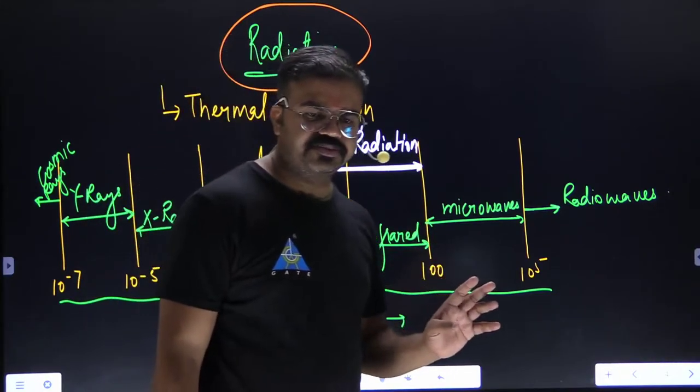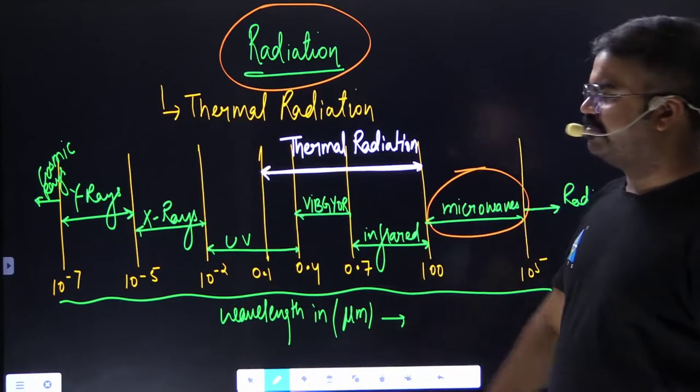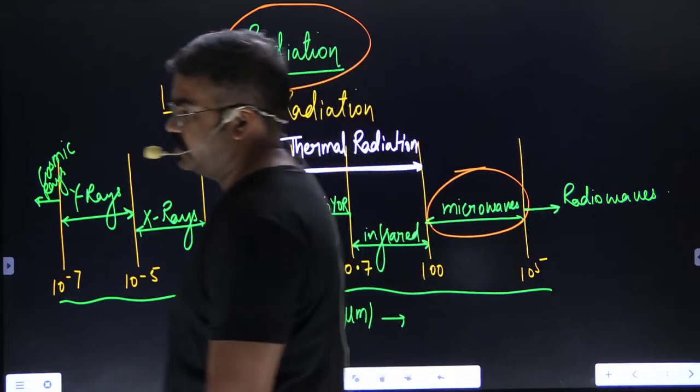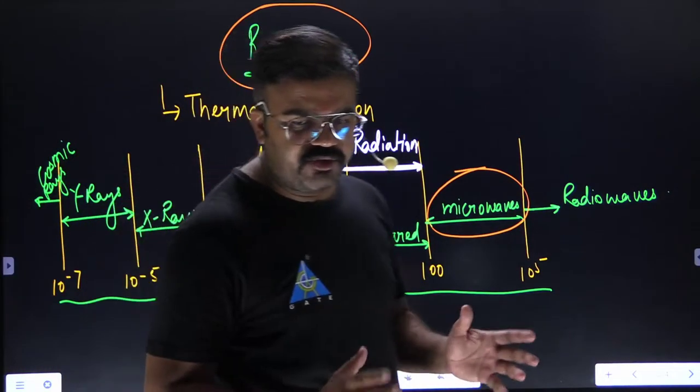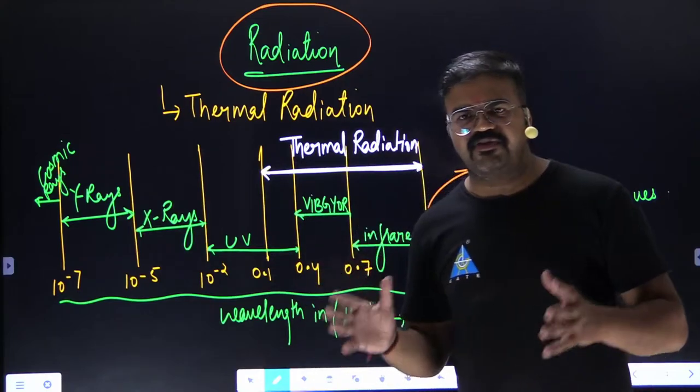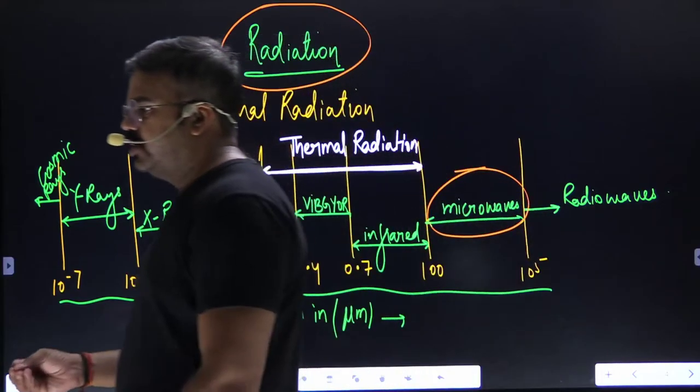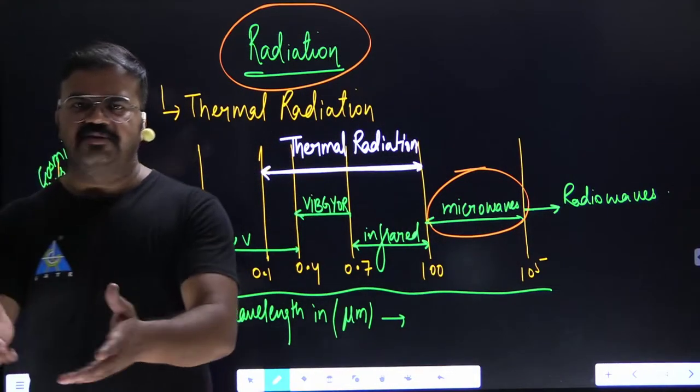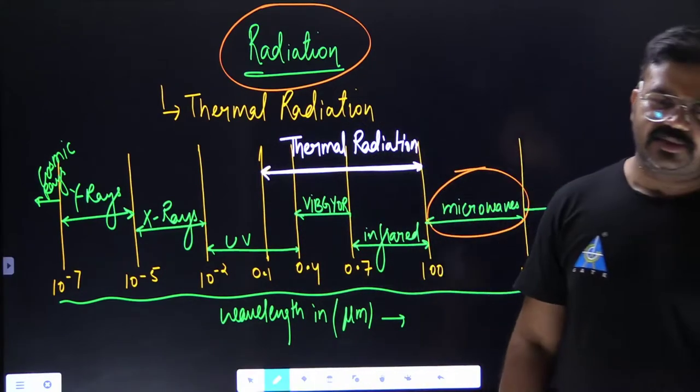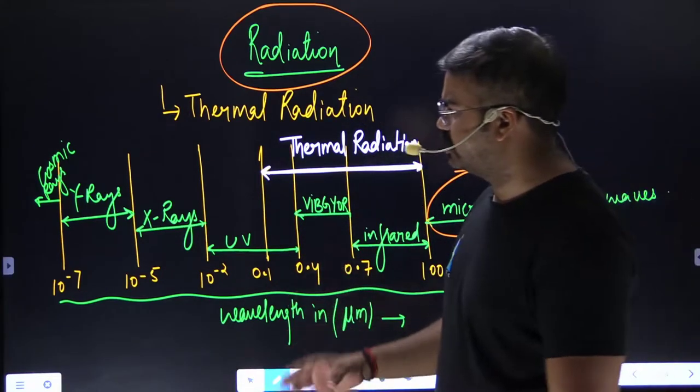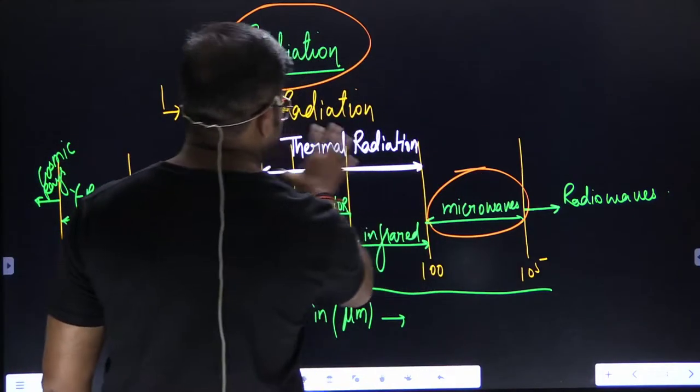But sir, why are you excluding microwave radiation? That's an interesting question. Because if we see, microwave ovens are used to heat up the food. If food has become cold, you put it inside a microwave oven and automatically it starts heating. Temperature is increased. But why are we excluding this from thermal radiation? This we have to study.